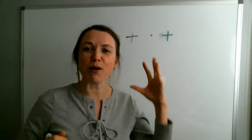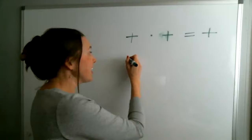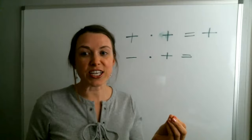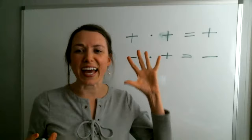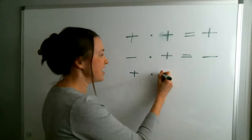Whenever you multiply a positive times a positive, what do you get? A positive. Now we're going to go a negative times a positive. A negative number times a positive number is going to give you a negative number. And the same goes with division, because we're doing division and multiplication. So a negative times a positive equals a negative. Now we're going to switch it — a positive times a negative is going to be what? A negative.